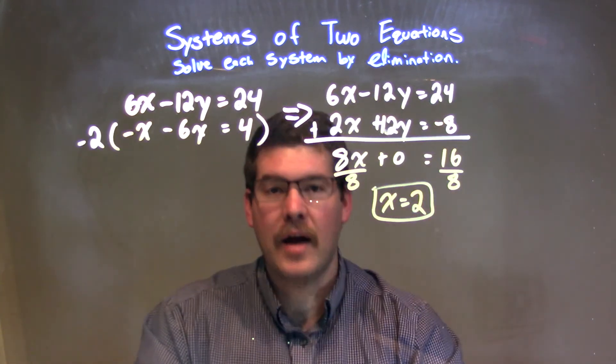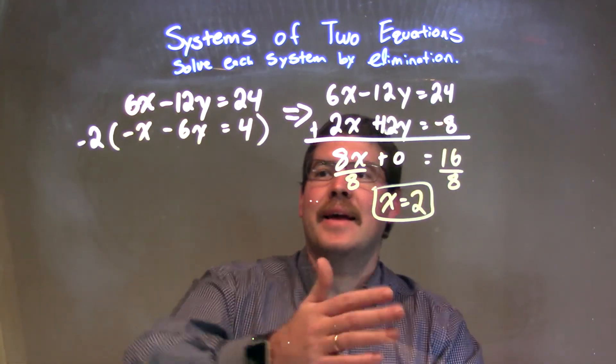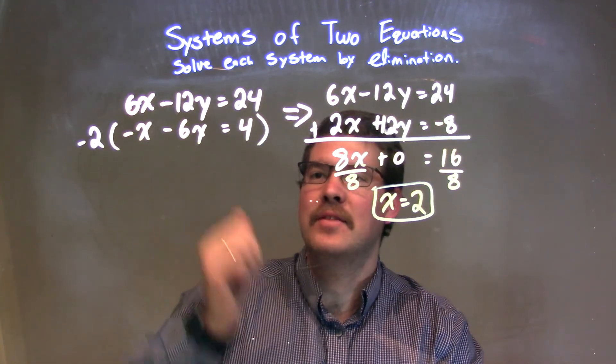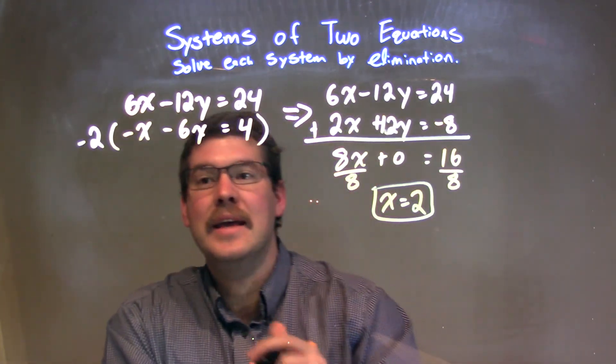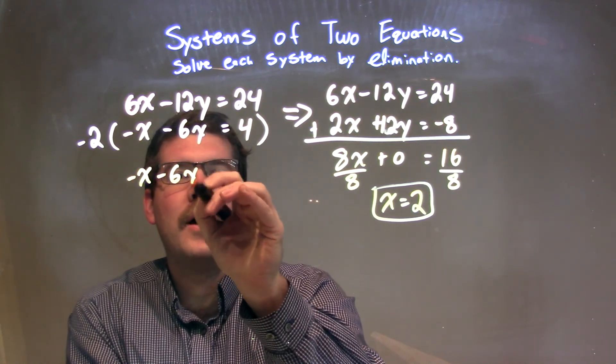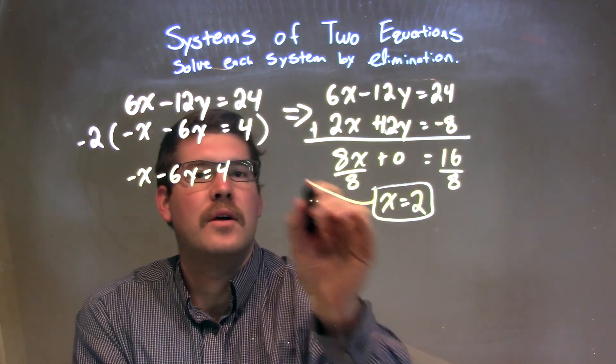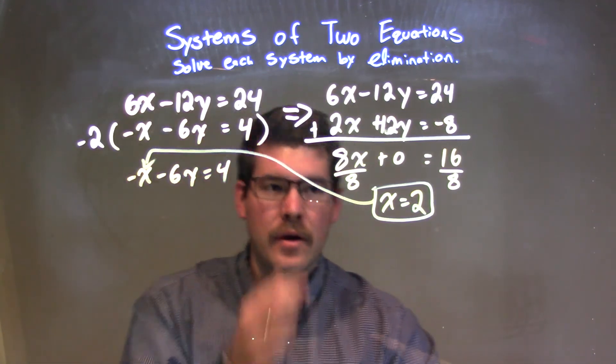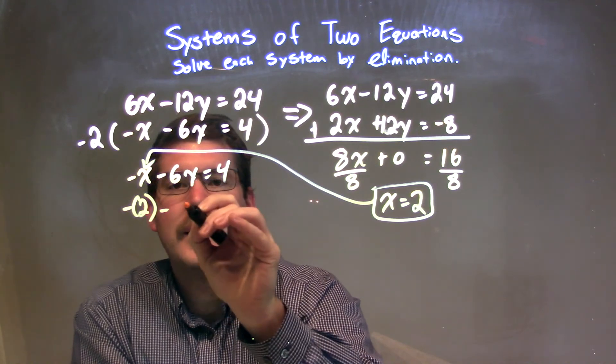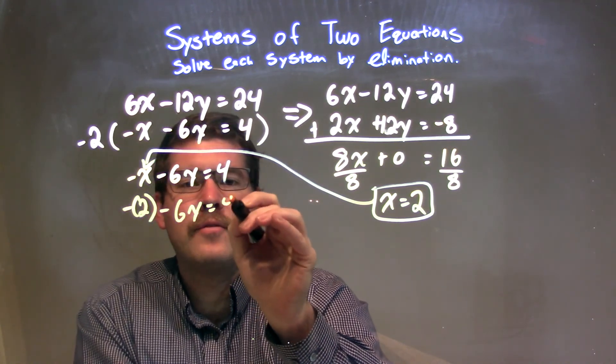Now that we have our x value, we need to plug that back into one of our equations to get our y value. I find the second equation looking a little bit easier. I'm going to take that negative x minus 6y equals 4 and plug in x equals 2 for x.